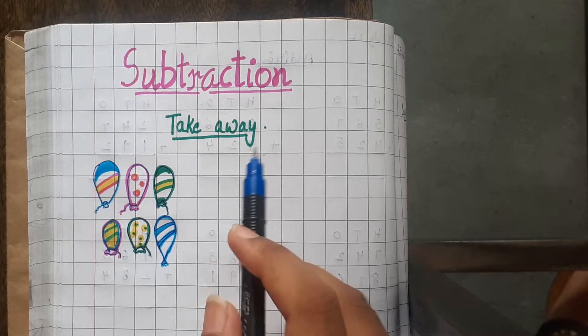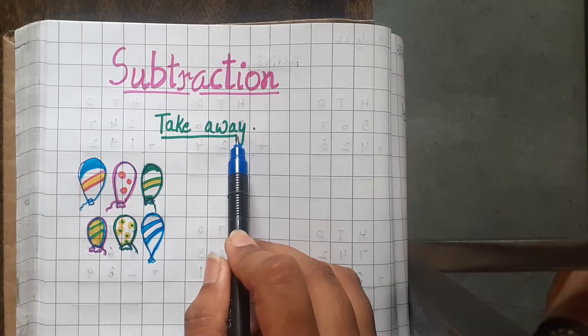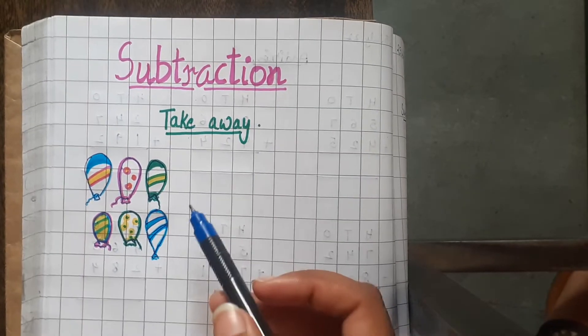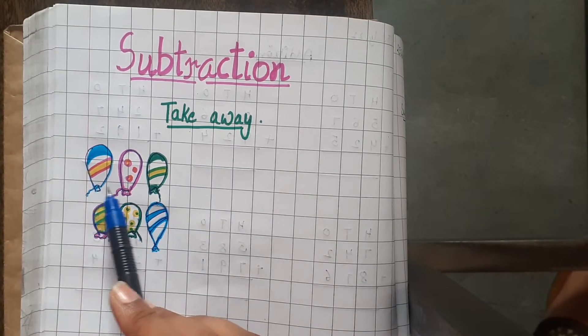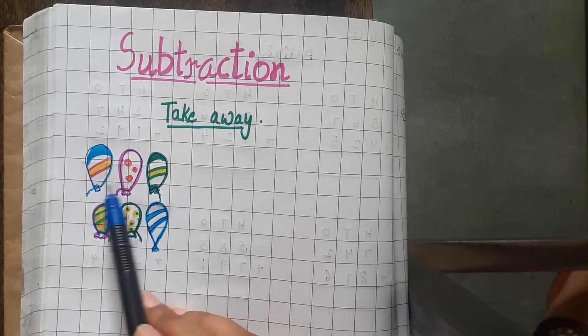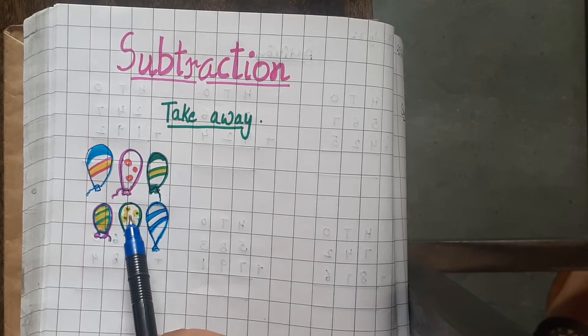Subtraction means to take away. Let us see an example. As you can see there are 6 balloons: 1, 2, 3, 4, 5, 6.